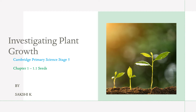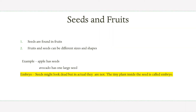Hello everyone, welcome to the Cambridge Primary Science. Today we are going to study about investigating plant growth. Our first topic is seeds and fruits. Seeds are found in fruits, and seed production is important for the plant species to continue.